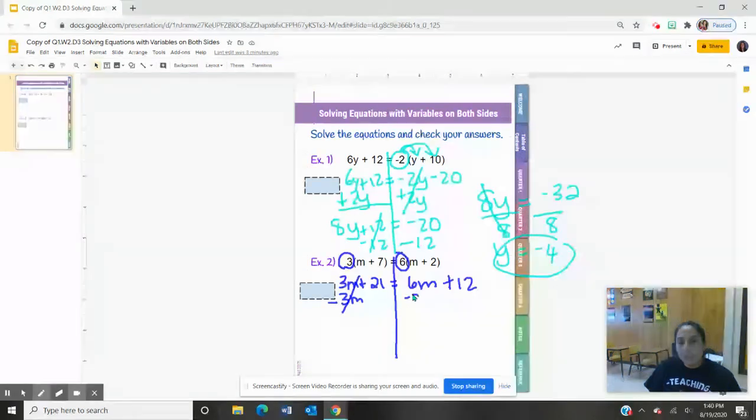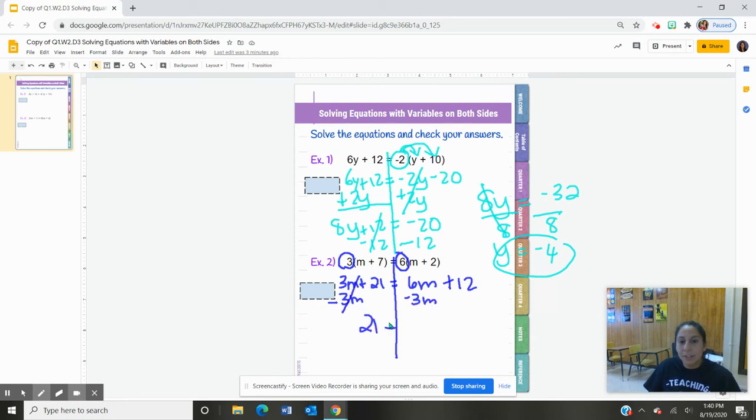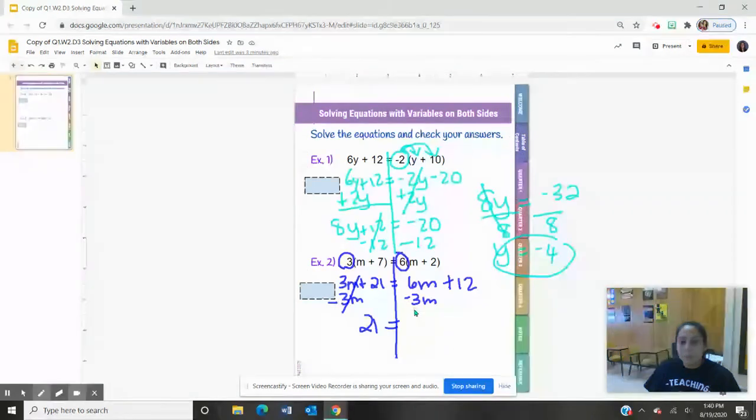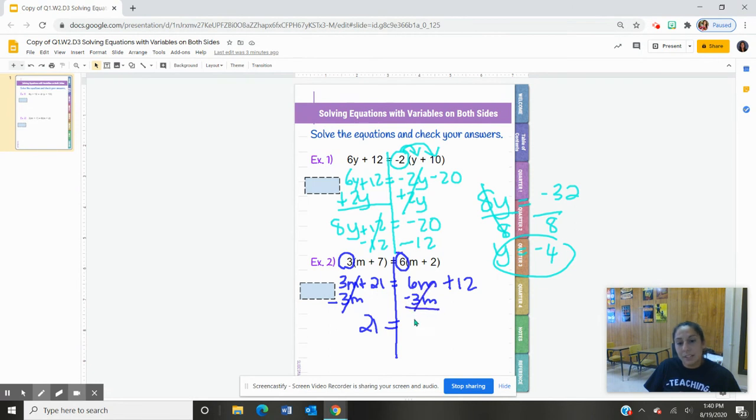So I'm going to take 3m from this side, and we end up with 21 is equal to 6m, take away 3m, that ends up with 3m + 12. And now it's a two-step equation. So you're going to get rid of the plus 12 by take away 12, take away 12 over here.